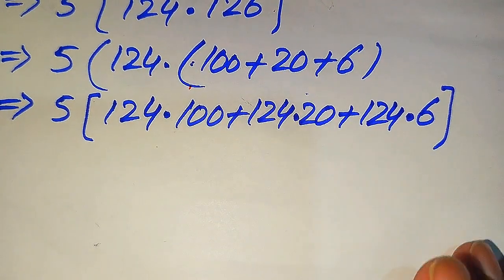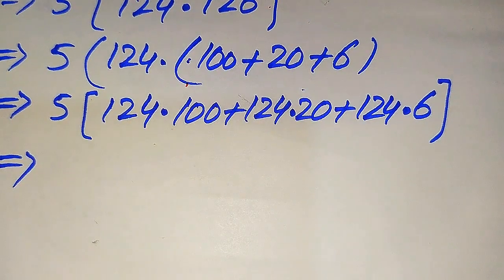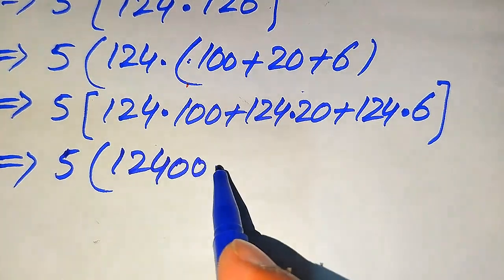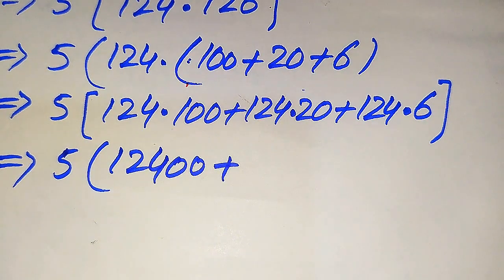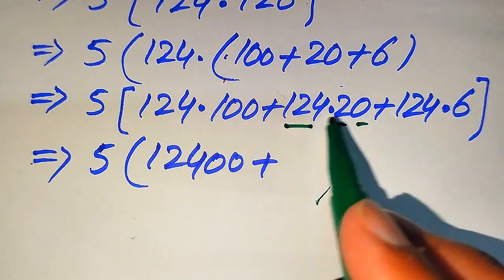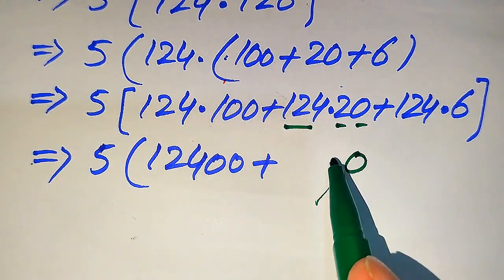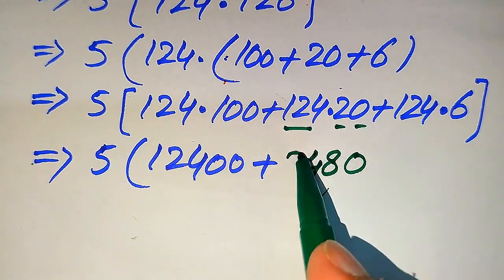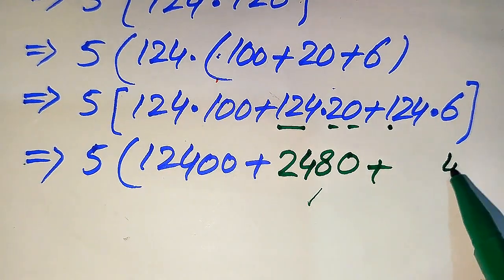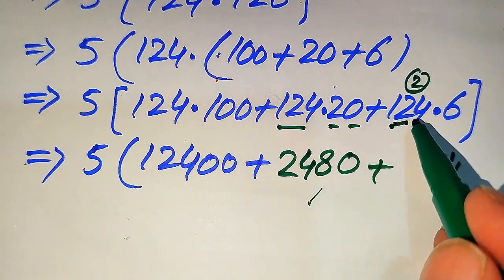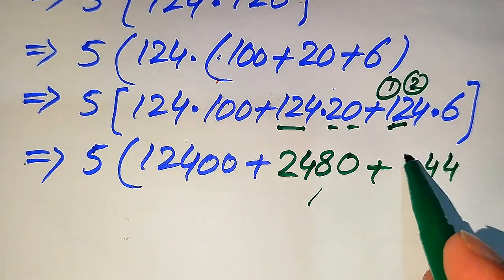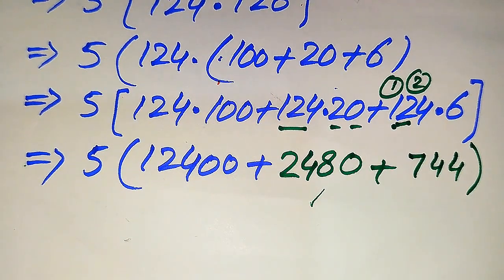124 times 100 gives 12400. For 124 times 20: multiply 124 by 2 to get 248, then append a zero to get 2480. For 124 times 6: 6 times 4 is 24 — write 4 carry 2; 6 times 2 is 12 plus 2 is 14 — write 4 carry 1; 6 times 1 is 6 plus 1 is 7. So 124 times 6 equals 744.